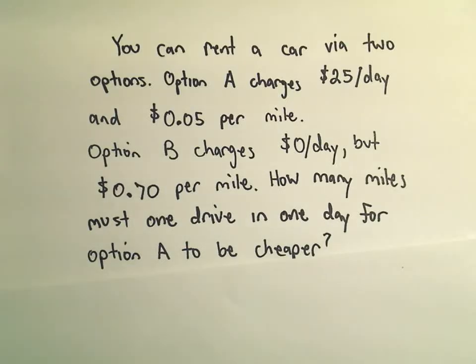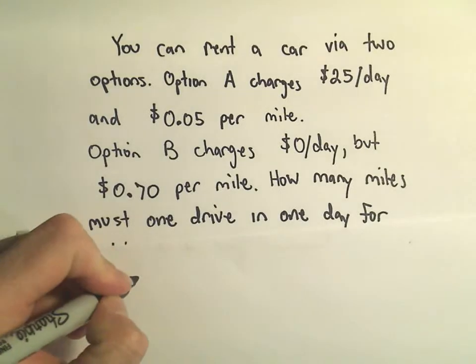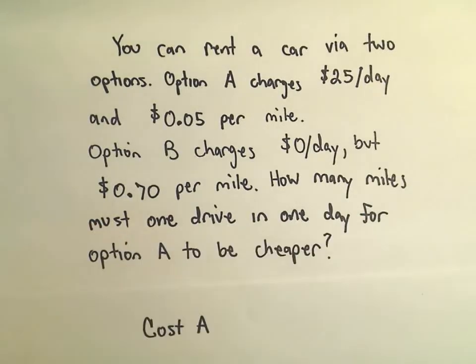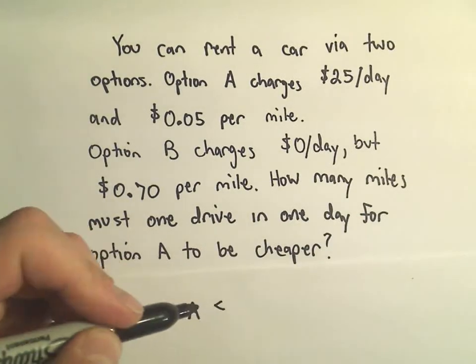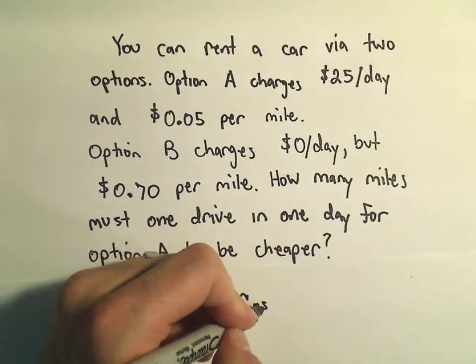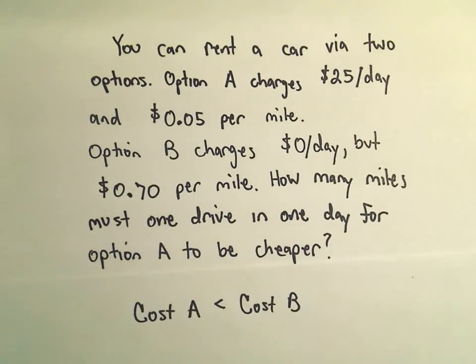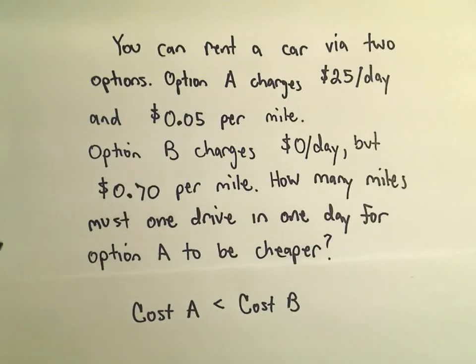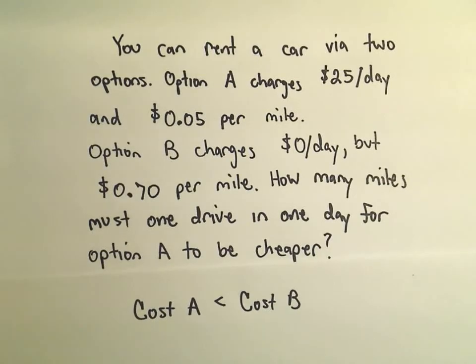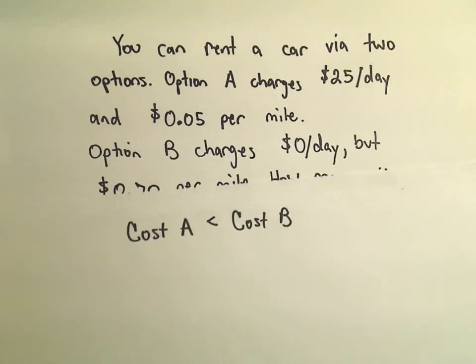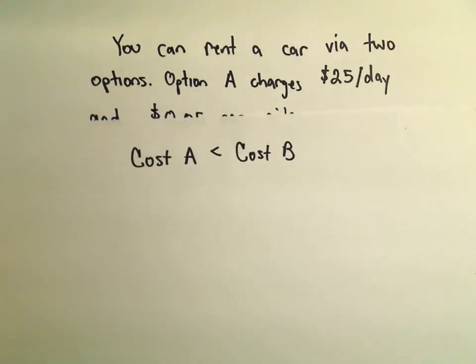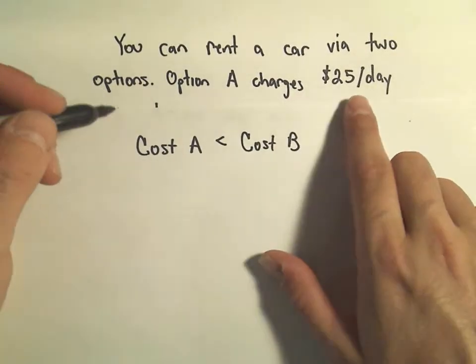So we're trying to figure out when is the cost of option A less than the cost of option B. Let's think about option A. We'll let X denote the number of miles driven in one day. So if you drive X miles, how much would it cost to use option A?